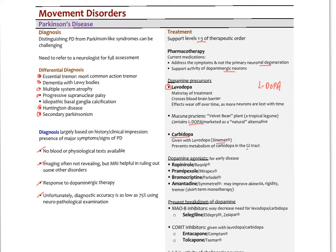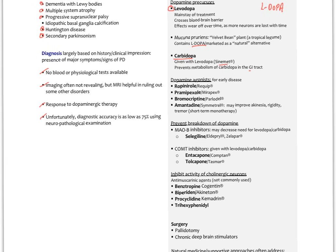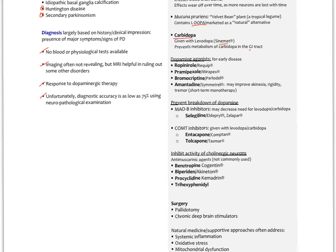Dopamine agonists are used in early disease, including ropinirole (Requip), pramipexole (Mirapex), and amantadine. These can improve short-term symptoms but effects usually wear off quickly. Interestingly, ropinirole and pramipexole are also used for restless leg syndrome, which is thought to involve temporary dysfunction of dopaminergic neurons in the basal ganglia.